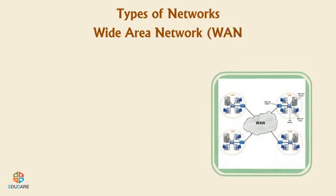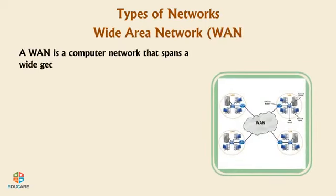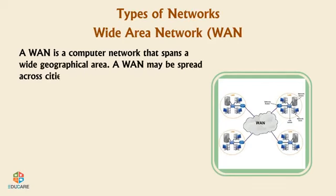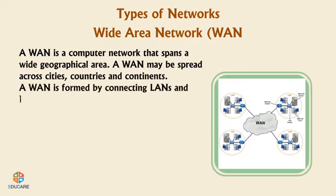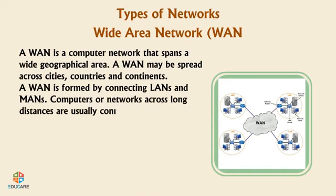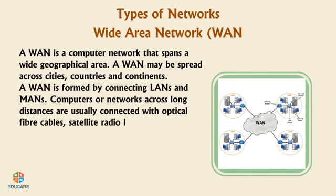Wide Area Network (WAN): A WAN is a computer network that spans a wide geographical area. A WAN may be spread across cities, countries, and continents. A WAN is formed by connecting LANs and MANs. Computers or networks across long distances are usually connected with optical fiber cables, satellite radio links, or microwave radio links.